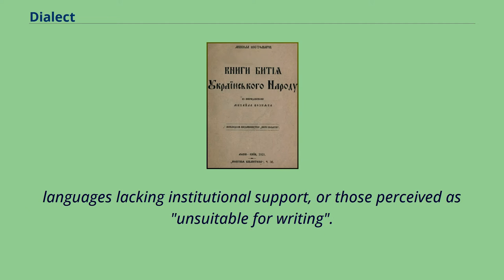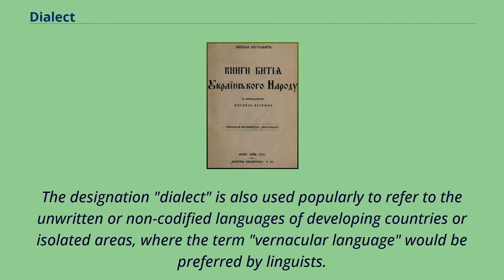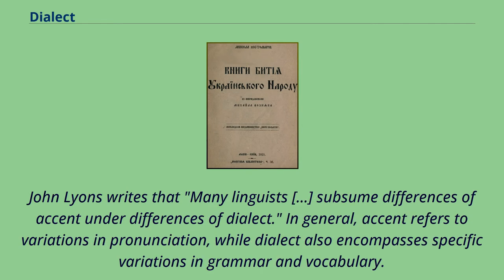The designation dialect is also used popularly to refer to the unwritten or non-codified languages of developing countries or isolated areas, where the term vernacular language would be preferred by linguists. John Lyons writes that many linguists subsume differences of accent under differences of dialect. In general, accent refers to variations in pronunciation, while dialect also encompasses specific variations in grammar and vocabulary.